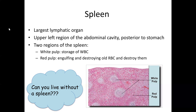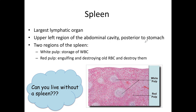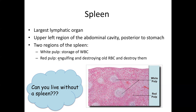The spleen is the largest lymphatic organ, located in the upper left region of the abdominal cavity, posterior to the stomach. The spleen has two regions: white pulp and red pulp. On a histology slide you can see the white area — the white pulp — where white blood cells are stored. The red area is called red pulp, and this is where old red blood cells are destroyed.